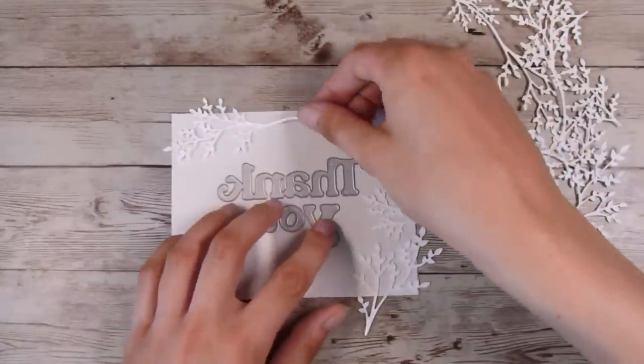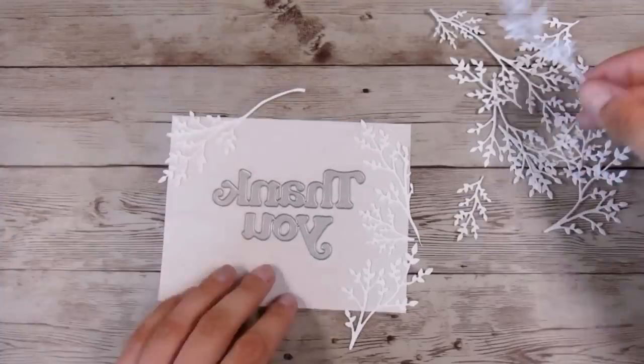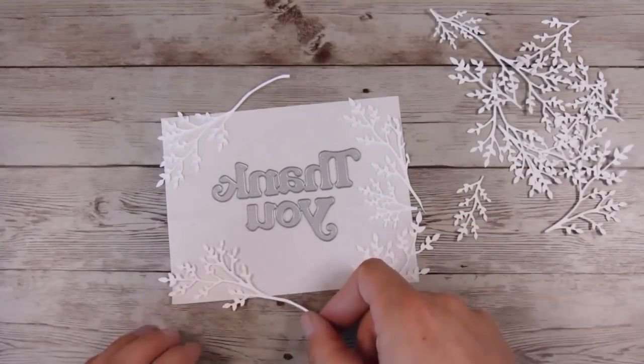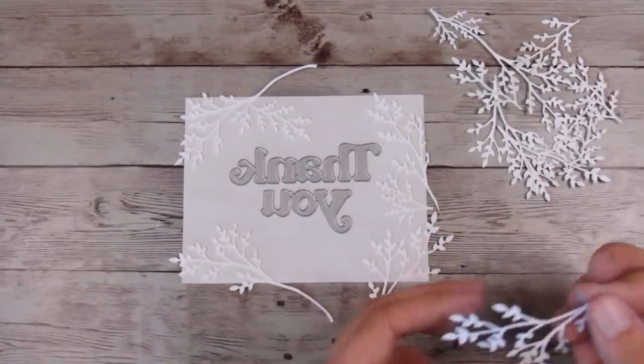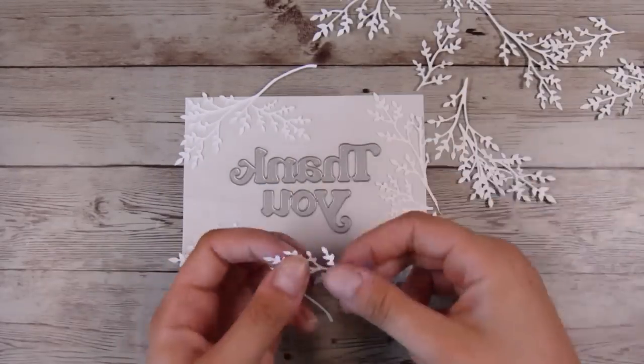You kind of have the back of the die cut facing up towards you. This is really important because when we put it down onto our card front, we want the nice side to be facing up.